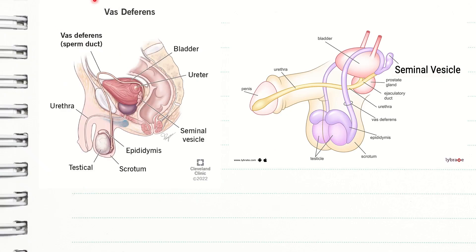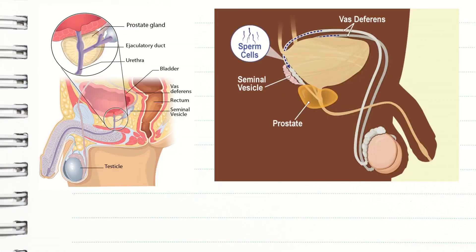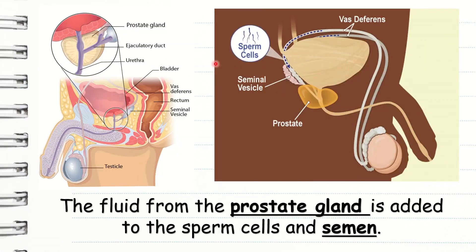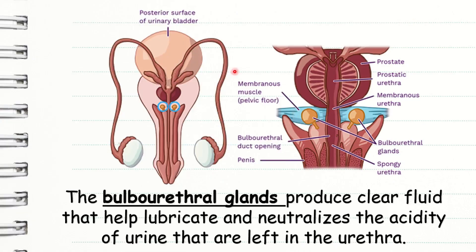Now let's continue. The vas deferens, as mentioned earlier, transports mature sperm to the urethra. It is part of the internal organs in the reproductive system. Attached to the vas deferens are the seminal vesicles, small pouches that make seminal fluid which nourishes and helps sperm travel. Also, additional fluid from the prostate gland, which is located under the urinary bladder, is added to the sperm cells and seminal fluid combination known as semen. Semen is ejaculated from the penis at the time of the male orgasm.